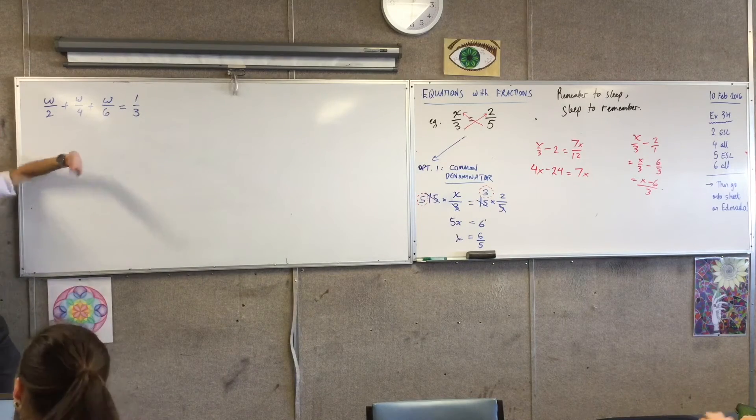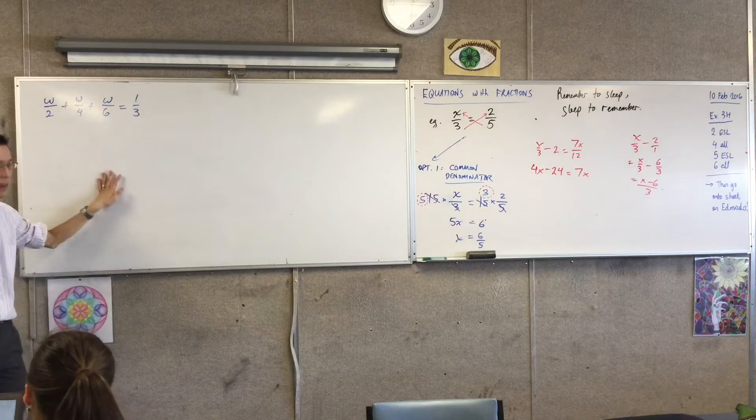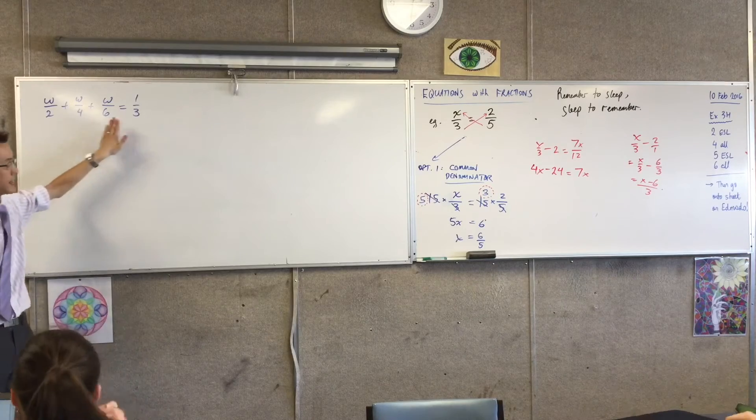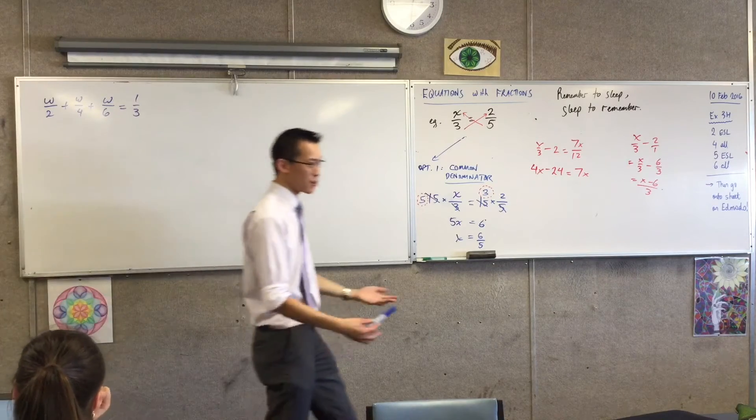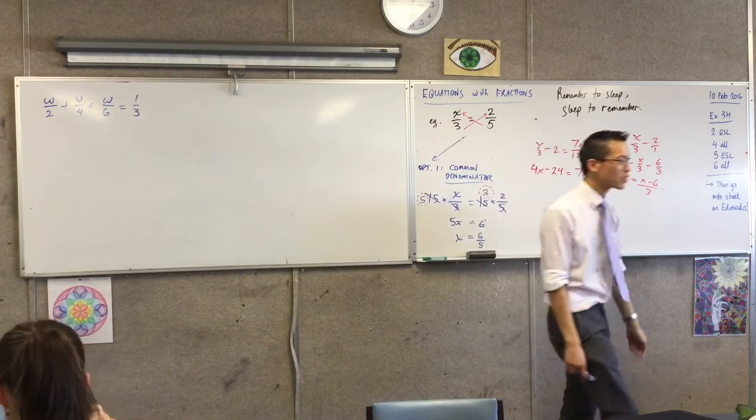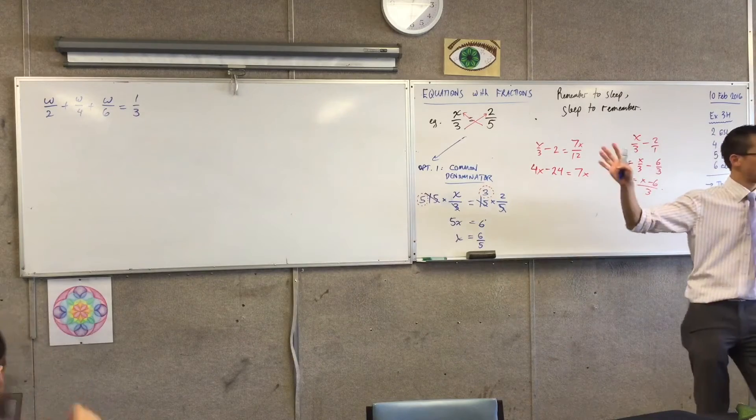Secondly, I'm not even going to finish solving this question probably, but I just want to show you the general strategy, right? One, two, three, four fractions. Gross.